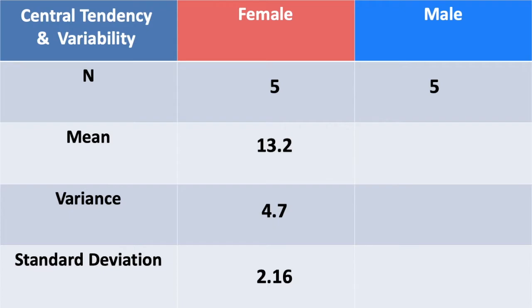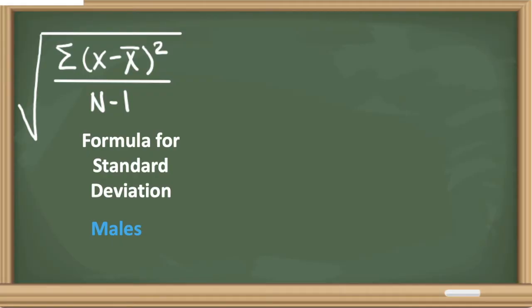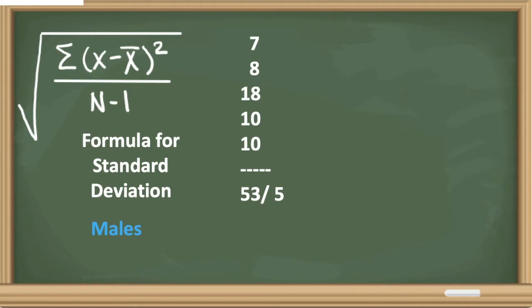We'll list our formula for standard deviation for males and start by finding the average number of laps completed. The males completed 7, 8, 18, 10, and 10 laps. If we total those values, we get 53. We divide by 5 because we have 5 numbers, giving us an average of 10.6.